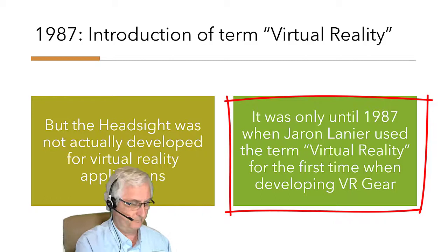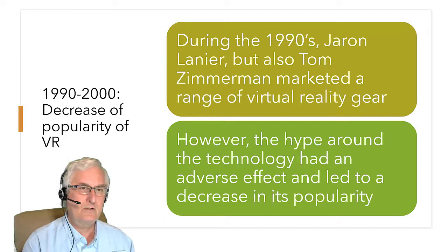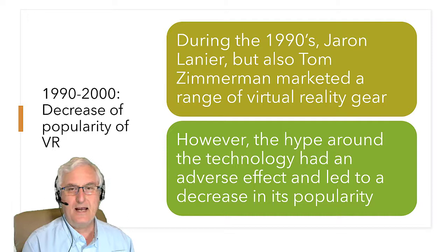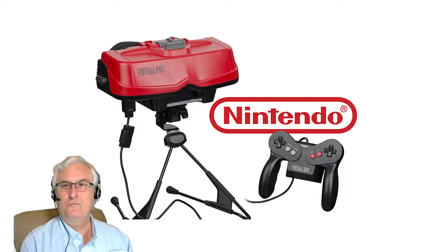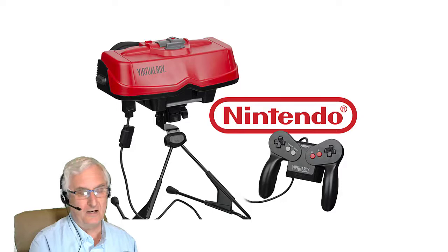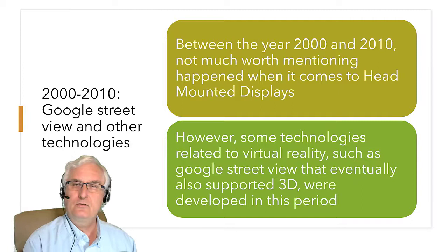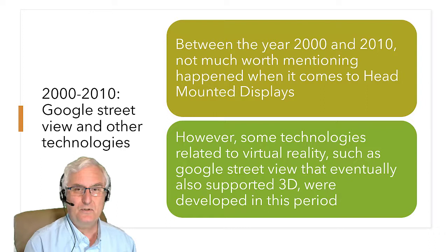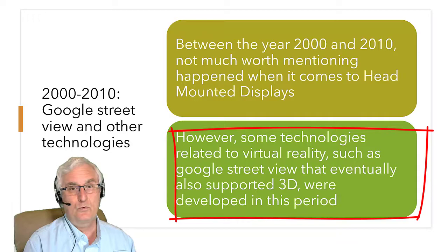During the 1990s to 2000 there was certainly a decrease in popularity of virtual reality. Jaron Lanier and Tom Zimmerman marketed a range of virtual reality gear, but the hype around the technology had an adverse effect and led to a decrease in popularity. One device that never really had much popularity was the Virtual Boy by Nintendo. Between 2000 and 2010 not much worth mentioning happened with head-mounted displays, though technologies like Google Street View with eventual 3D support were developed in this period.